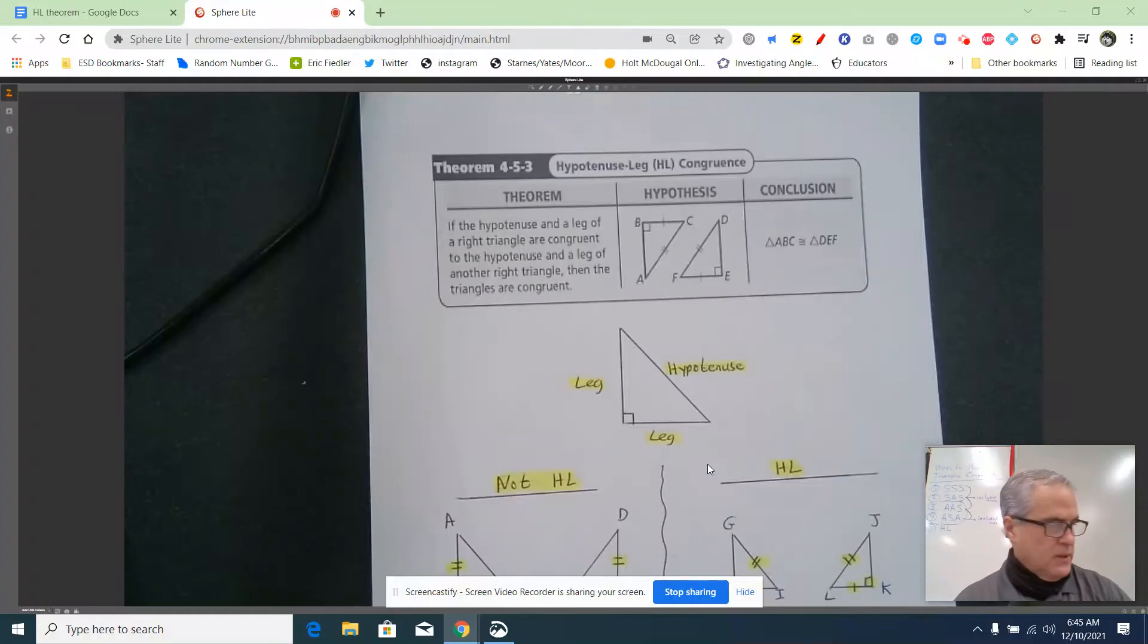Here's that theorem I've been asking you guys to skip on certain problems and we're going to address it now. It's called the fifth way to prove that triangles are congruent, the hypotenuse leg congruence theorem.